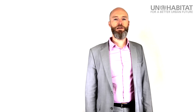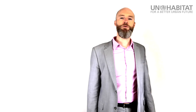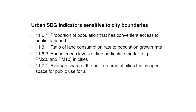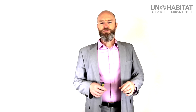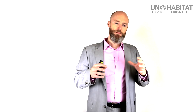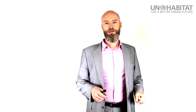This is important because many of the indicators behind the urban sustainable development goal are very sensitive to where you draw the boundary of your cities. For example, access to public transport will be high if you have a very tight definition of your city, but it'll be much lower if the boundary is further out. The same is true for the ratio of land consumption relative to population growth, air pollution, or the average share of built-up area that's open space for public use. So that's why we want to find a better way of defining your city.